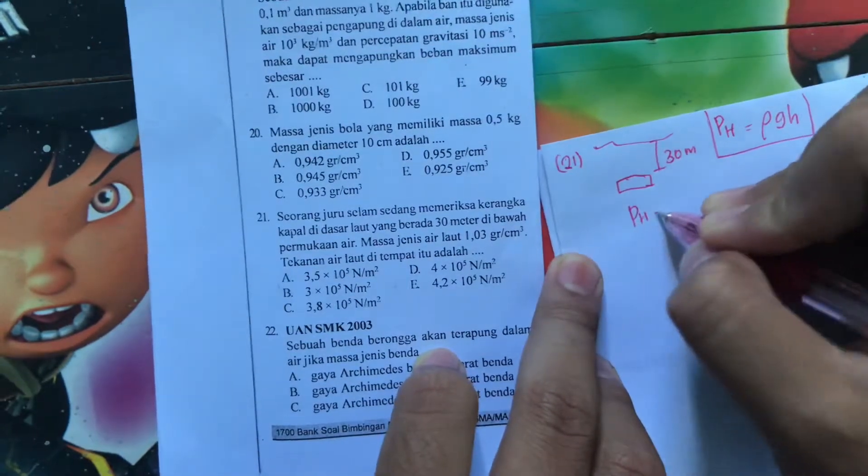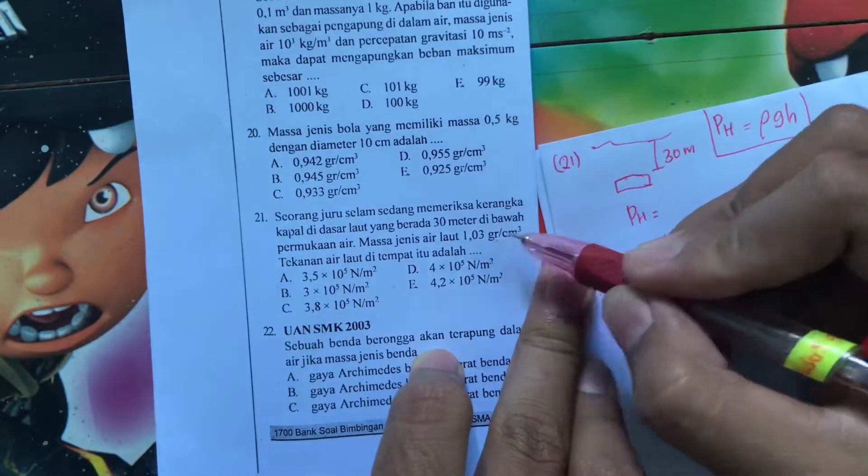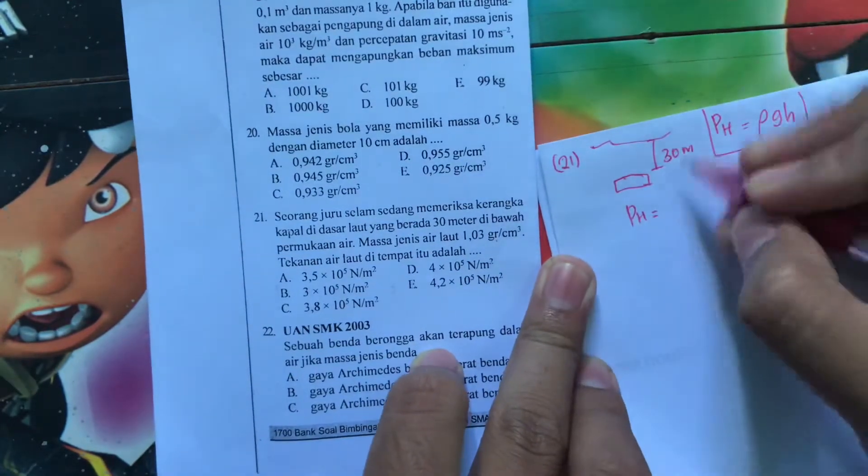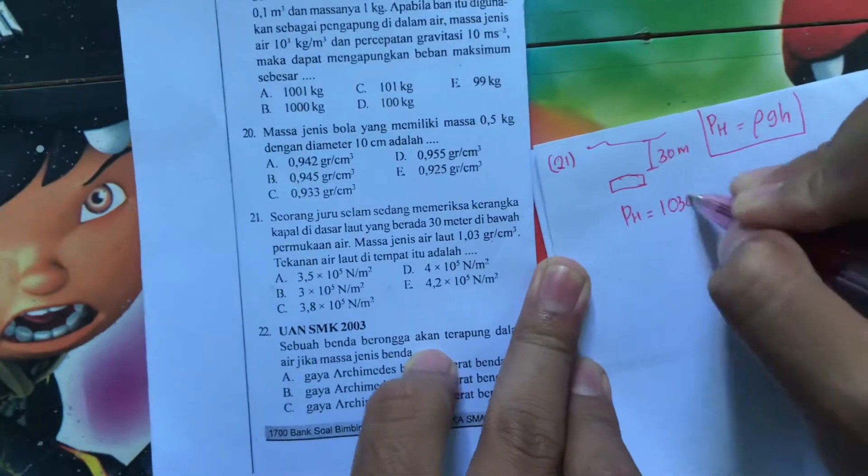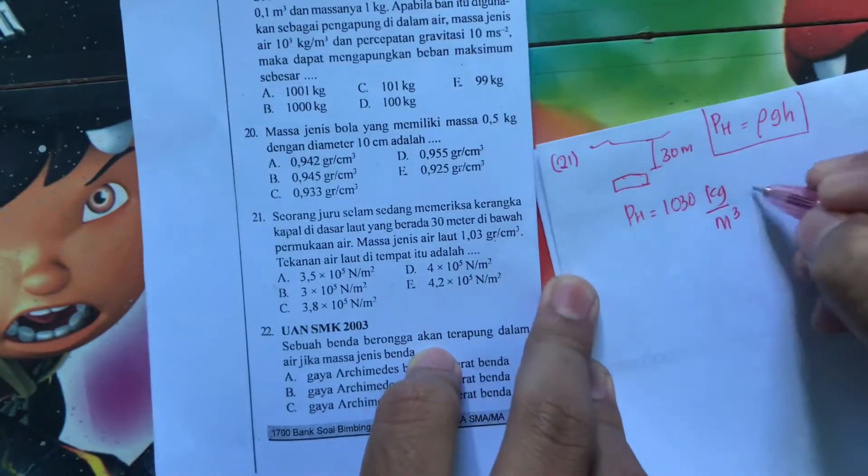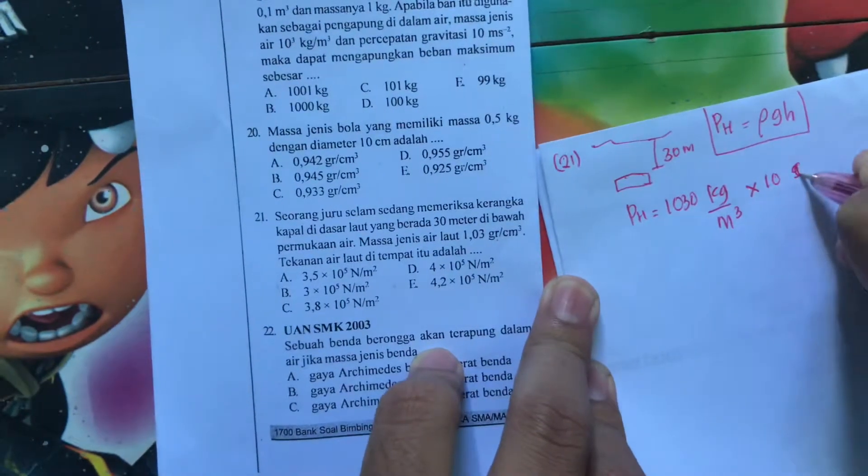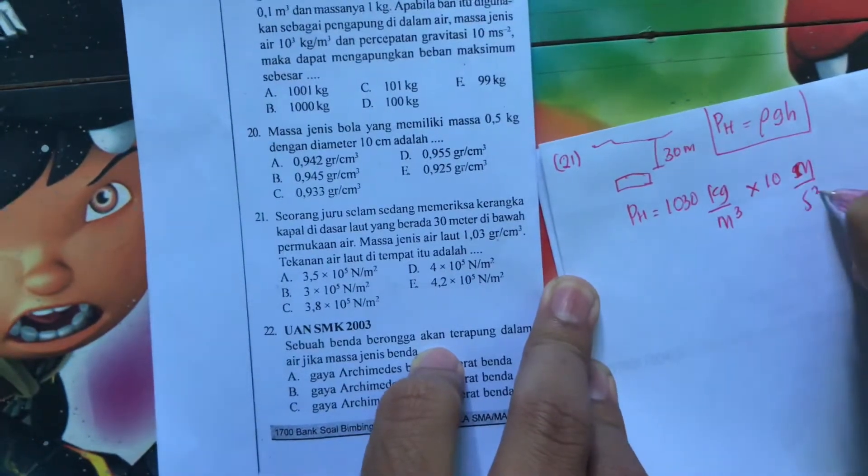Yuk, kita masukin. Berarti, P hidrostatis sama dengan rho-nya berapa? 1,03. Jangan lupa, kalau kilogram ke meter kubik berarti harus kali seribu. Berarti menjadi 1030 kilogram per meter kubik. Terus kemudian kalikan gravitasnya. Berapa kalau nggak diketahui? Berarti 10 meter per sekon kuadrat.